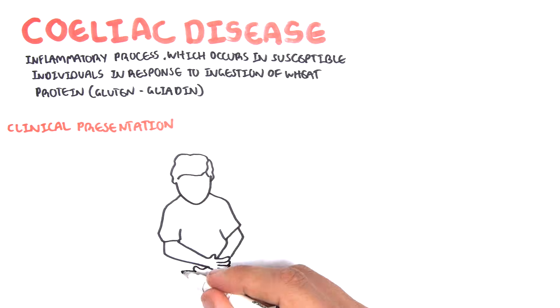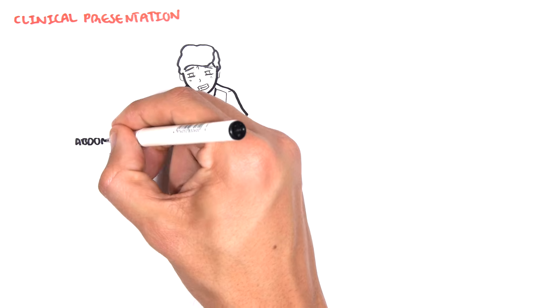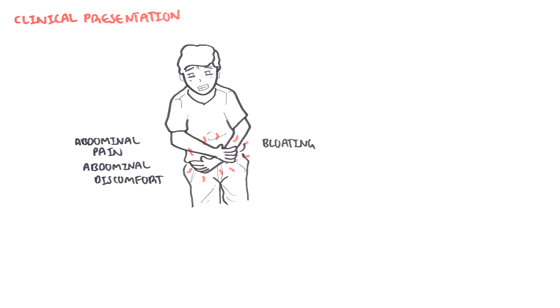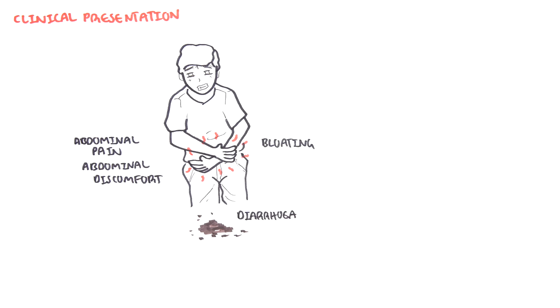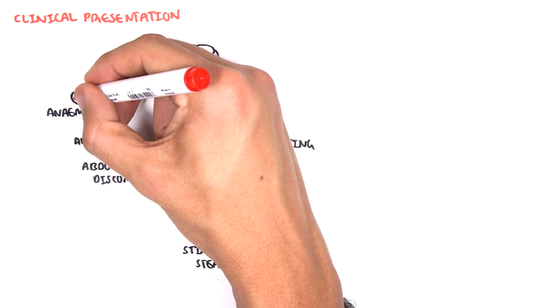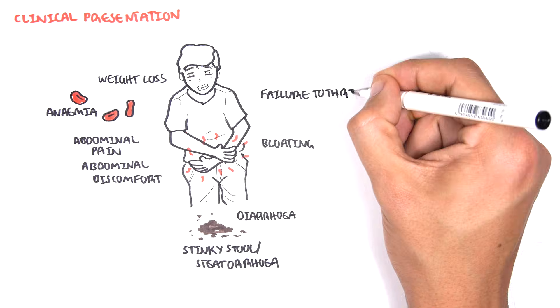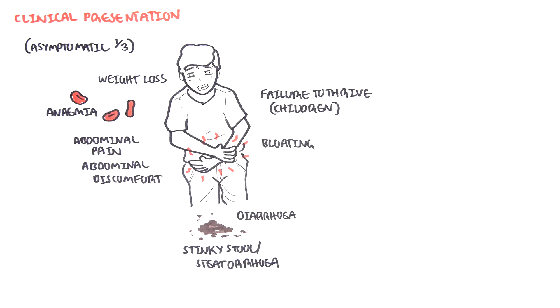The clinical presentation of celiac disease includes abdominal pain, abdominal discomfort, bloating, diarrhea, stinky stool, steatorrhea, anemia, weight loss, failure to thrive, specifically in children, but celiac disease can also present asymptomatically in one third of people who have it.